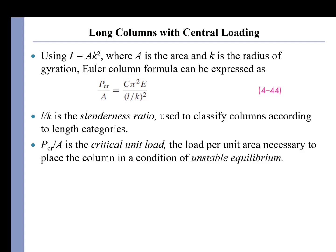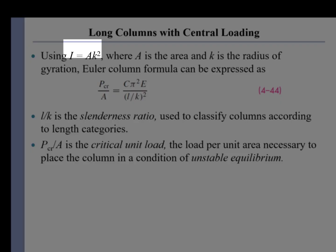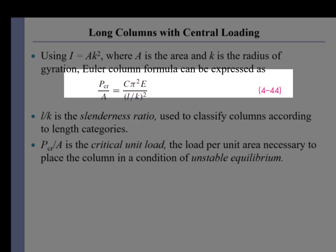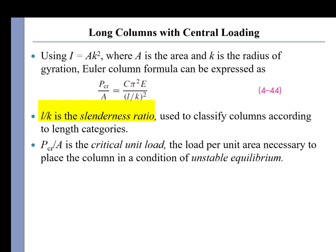The other thing that we like to do is replace the polar moment of inertia with the radius of gyration. The radius of gyration is just the location where you would place all the area to get the same polar moment of inertia. If we replace I with A·k², then we get equation 4-44, where the critical buckling load divided by the cross-sectional area, which looks like a stress, is equal to the pre-factor C times the square of pi times the elastic modulus divided by L over K squared. And that L over K is given a special name: the slenderness ratio, used to classify columns according to their length category.